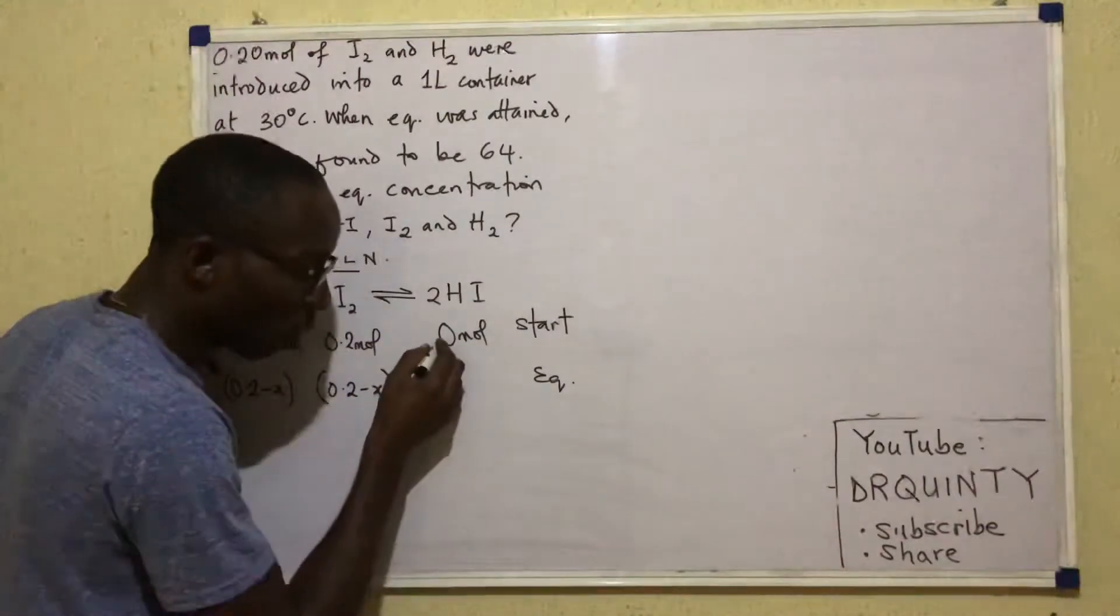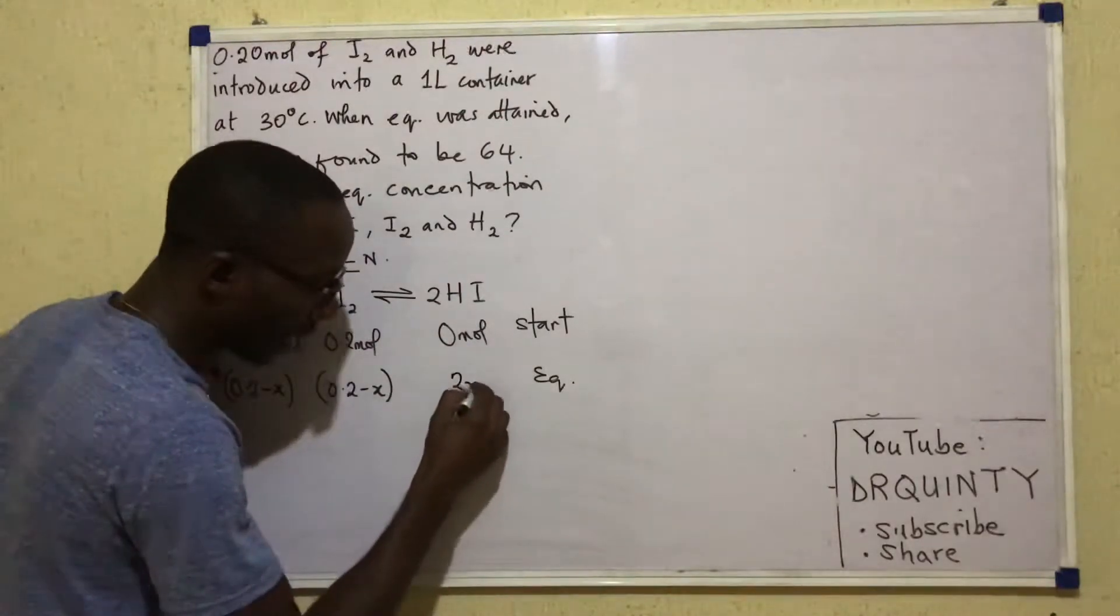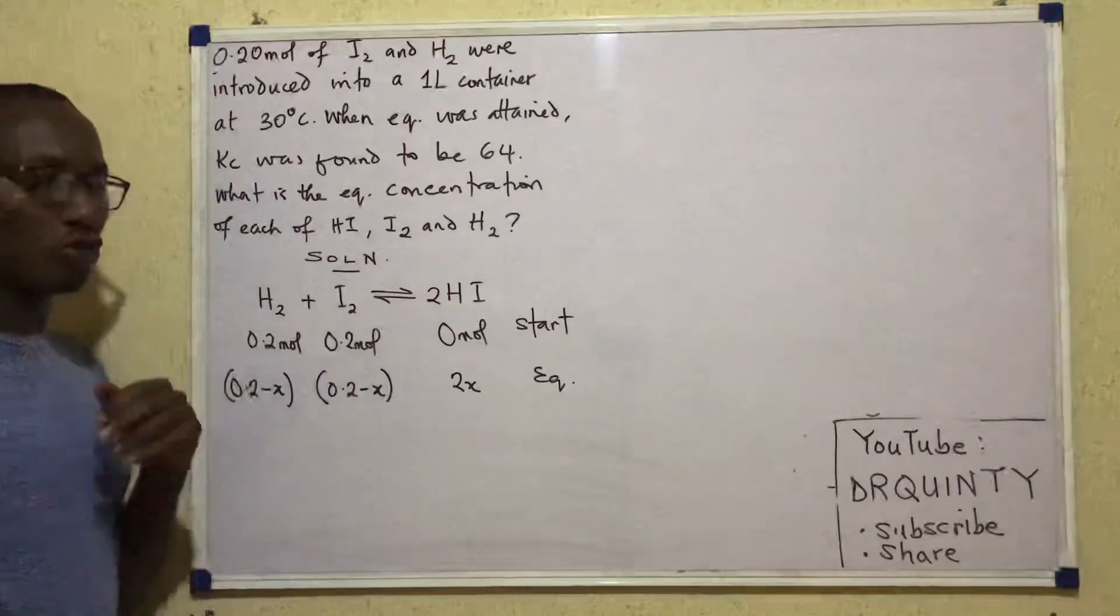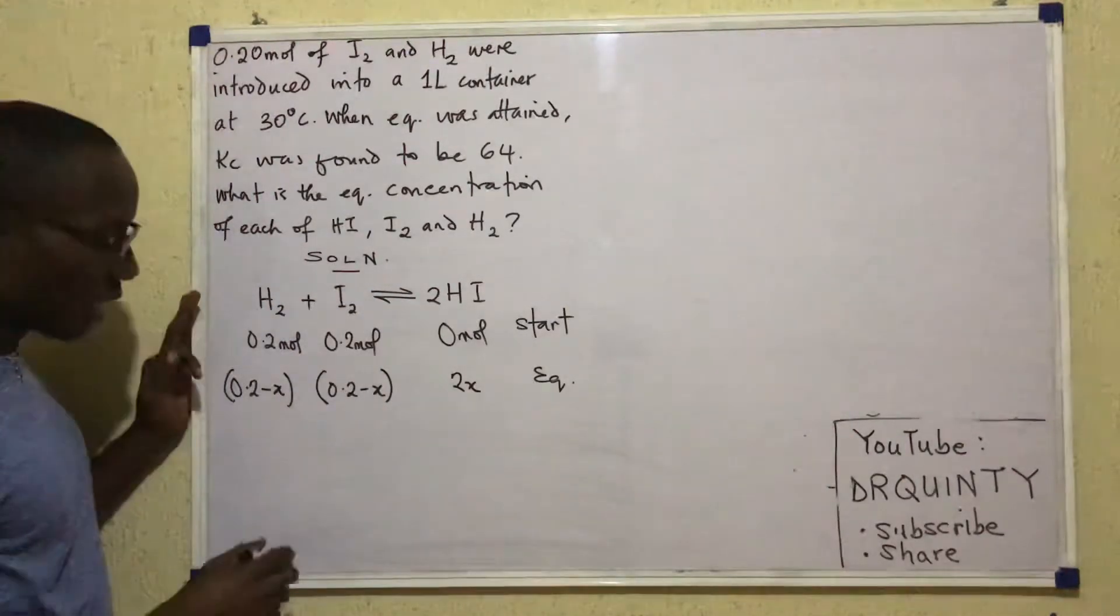Then for the HI, there was none before. So 2X will appear from the X and X, like 1 and 1 used here to produce 2. So 2X of that will be produced.